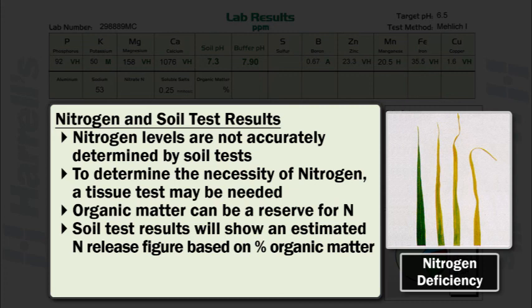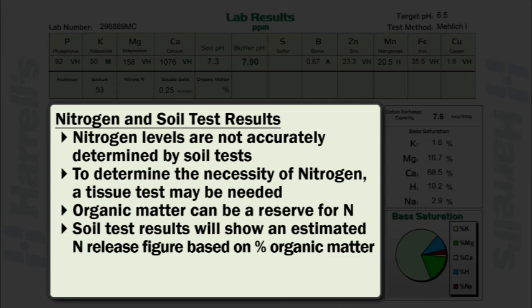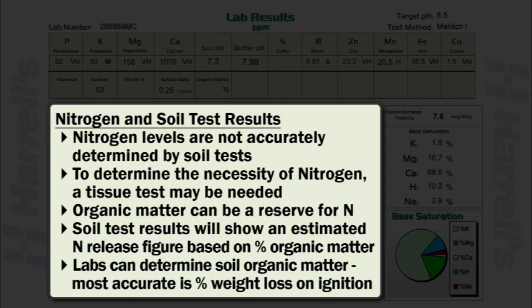The expected release of nitrogen through the action of microorganisms is difficult to predict. Labs also provide various techniques for determining soil organic matter. The most accurate technique uses the percent weight loss on ignition method.